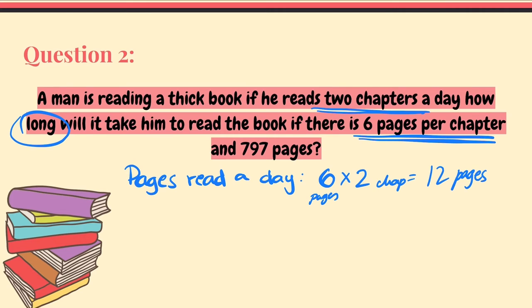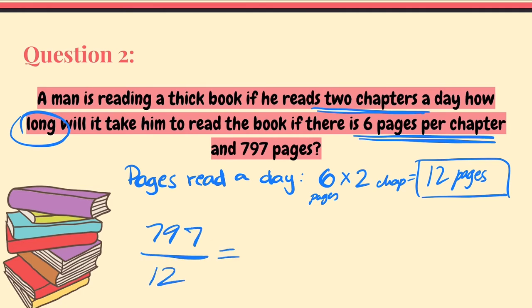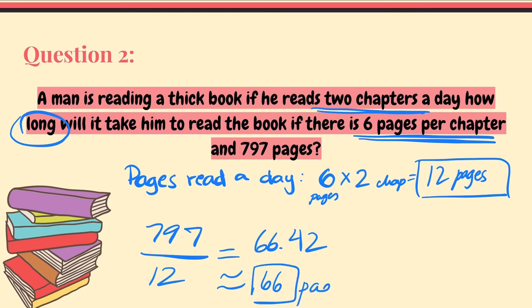Now that you have 12 pages per day, the question asks how long it will take to read 797 pages total. So you divide 797 by 12 pages per day. You put that in the calculator and you get 66.42 days. Again, you can't read 66.42 days, so you will have to round it — and the question will tell you how. So the answer is approximately 67 days.